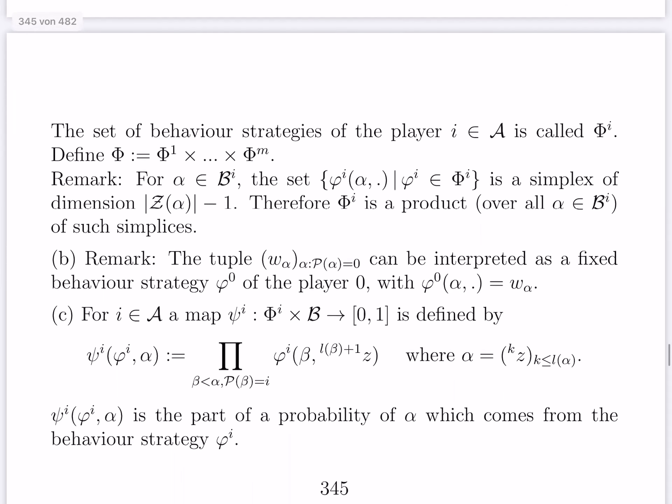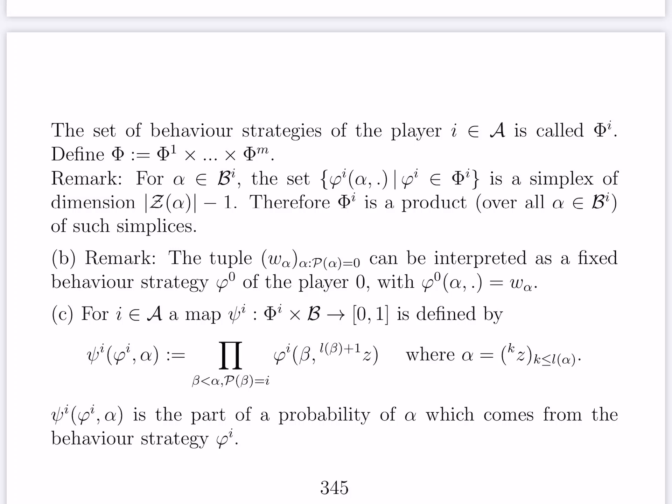Now for player 0, the player nature, in fact we have already such a tuple in our hands. The tuple w alpha had been a tuple of probability distributions over the possible moves after each play alpha, if player 0 plays after play alpha. So it can now be seen just as a fixed behavior strategy phi upper 0 for the player nature. And phi upper 0 of alpha is then equal to w alpha. So in some sense we have seen already such behavior strategies, namely for player 0 — we have a fixed one in our game.